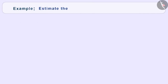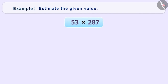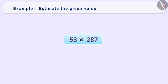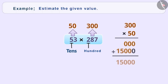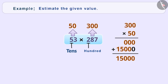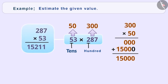Next example: Estimate the given value — 53 into 287. While estimating multiplication, find the highest place value of both the numbers to be multiplied. Here, the highest place value in 53 is tens and the highest place value in 287 is hundreds. Then approximate the respective numbers to the highest place. On approximating 53 to tens, we get 50. And on approximating 287 to hundreds, we get 300. Then multiply the approximated numbers — we get 15,000, which is both meaningful and accurate.